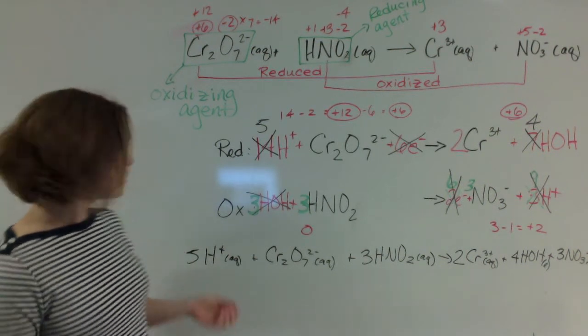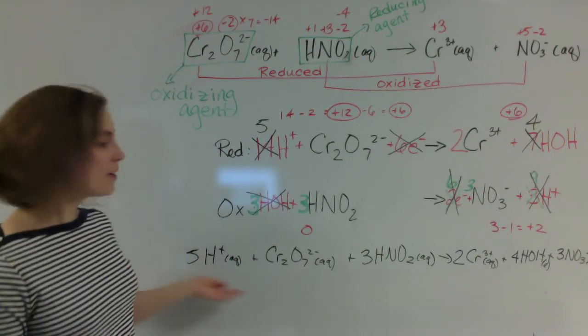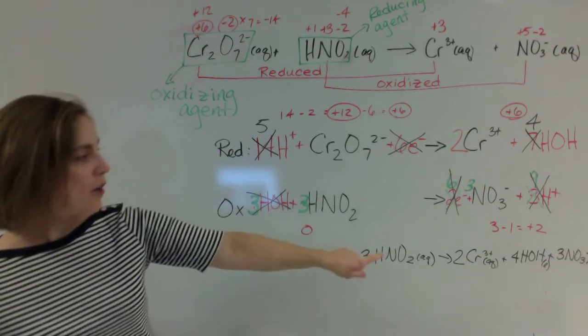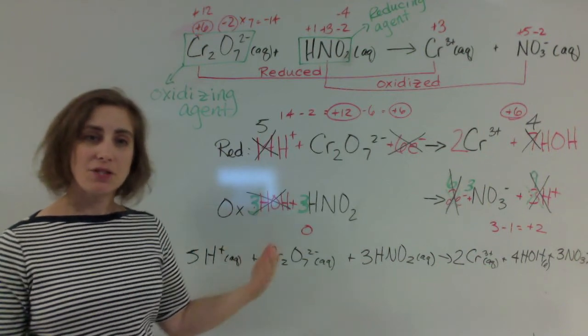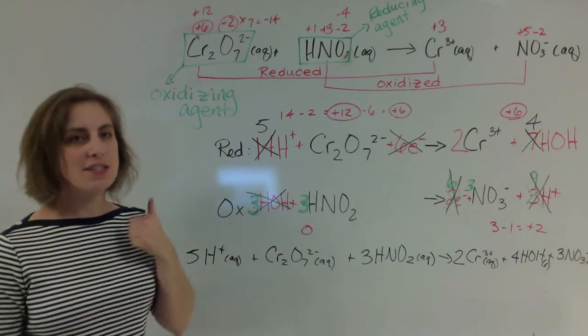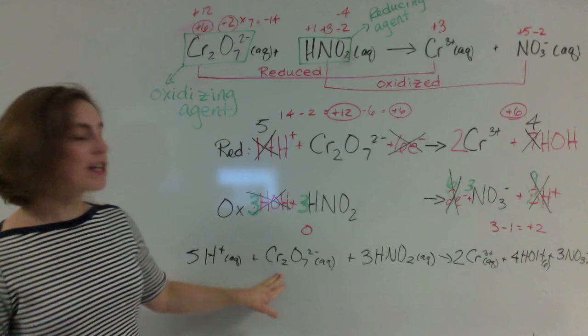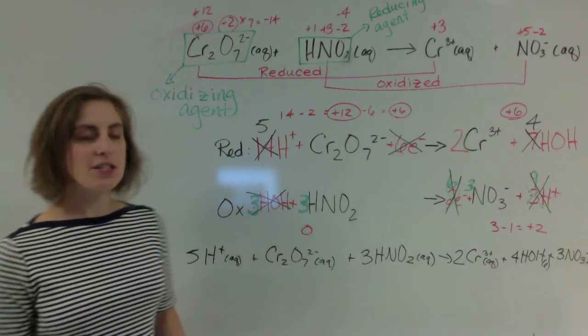Let's start with our atoms. We've got five hydrogens here and three hydrogens here. That's eight hydrogens. Over there, we have four times two from the water. That's going to be eight hydrogens. Good. Next, we've got two chromiums here and two chromiums there. Good to go.